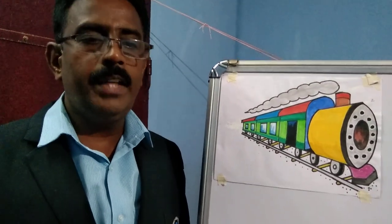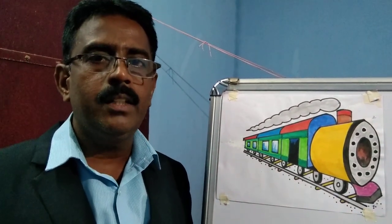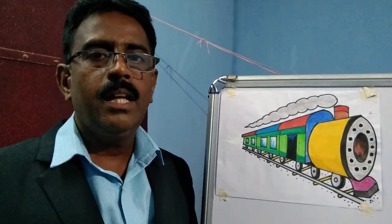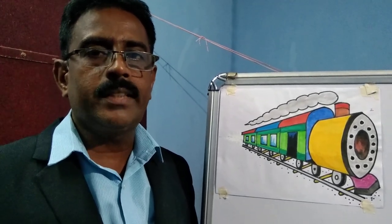Hi friends. Today we are going to draw a train using alphabet letter V, J and oval shape.